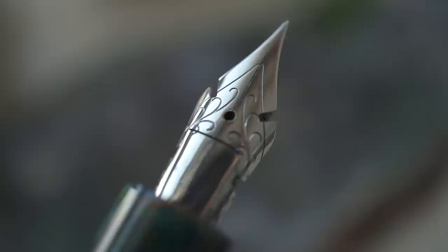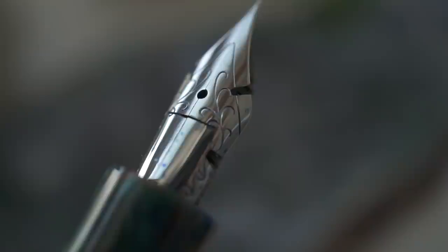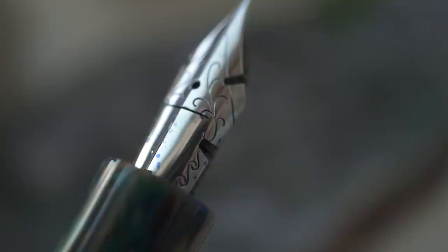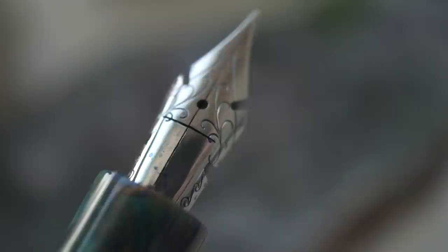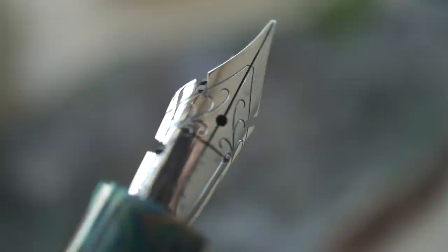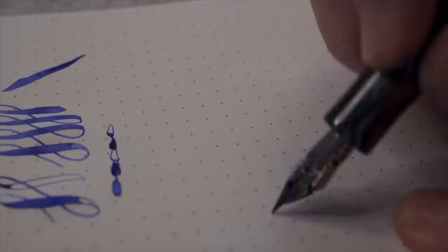So I had been on a search for a modern flex nib that didn't require you to really crank down on it when you were flexing. And then along came the Secretary of Deflex from Pen Realm. You can see on the sides it has cutouts, and then it has a cross cutout in the center. And it was just an awesome flex nib.